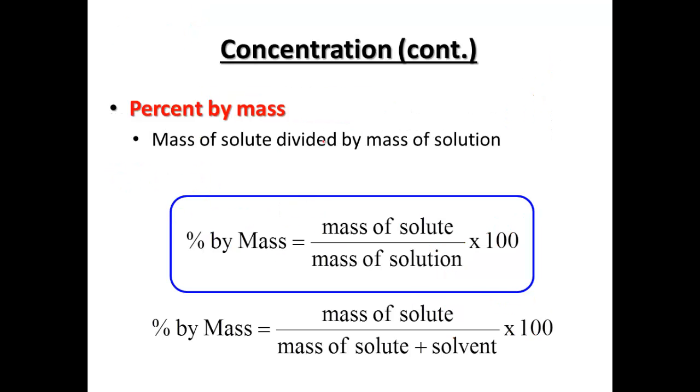Now our other way to do concentration is percent by mass. And so percent by mass, make sure we write down this idea, it's the mass of the solute divided by the mass of the solution. So it's the entire solution is going to be the key part. So our equation percent by mass, mass of the solute divided by mass of the solution times 100. So that gets us to our percent. Now notice mass of the solution is the solute and the solvent added together. So it's the entire mass of what we're looking at.